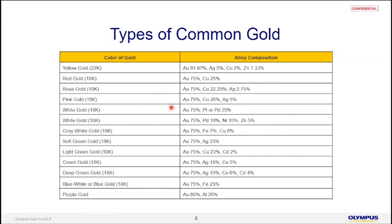These are the typical ranges of concentration for the different alloys that create the coloring of gold itself. Last but not least, we have this interesting one that has only been in the market for about five to ten years, which is purple gold. Purple gold is a combination of gold and aluminum, which gives it a purple color. This is not very commonly found in the market.